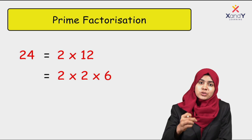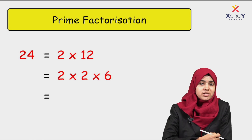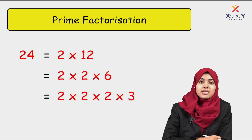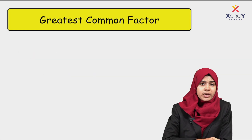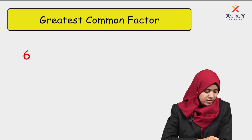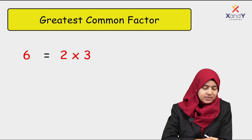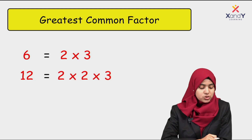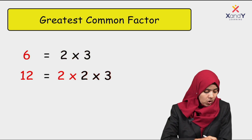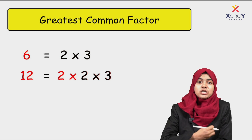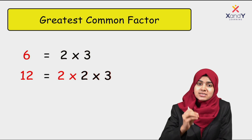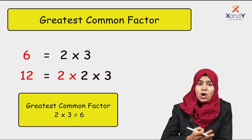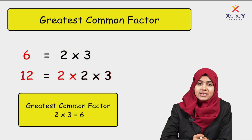So 24 is equal to 2 × 2 × 2 × 3 by prime factorization. And 6 in prime factorization is 2 × 3. Then 12 in prime factorization is 2 × 2 × 3. Here, 2 × 3 is common. That means 6 is a factor of both. So the greatest common factor of 6 and 12 is 2 × 3, which is 6.